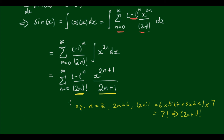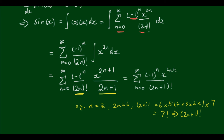So we can rewrite this as the sum from n equals 0 to infinity of negative 1 to the power of n, divided by (2n + 1) factorial, times x to the (2n + 1). And that is the explicit form of the Maclaurin series for sine x.